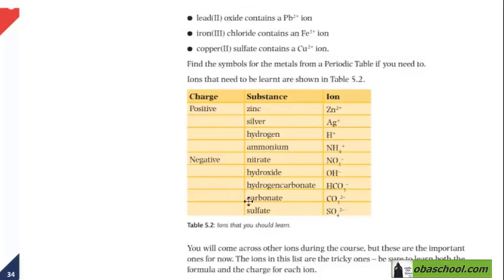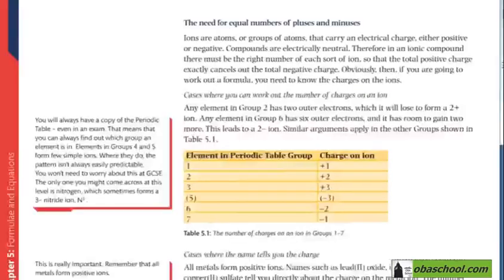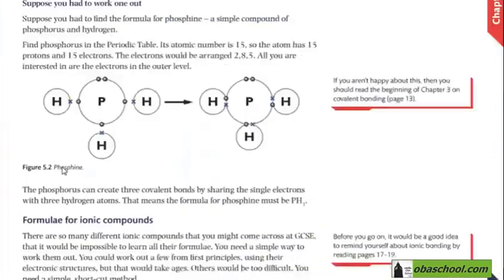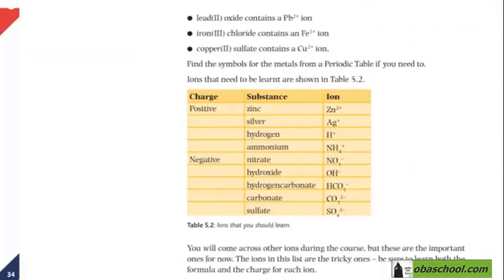Table 5.2 shows you charges on ions that are common in chemistry. So we are going to learn how to write the formula for ionic compounds, and that is pages 33 and 34 of your book.